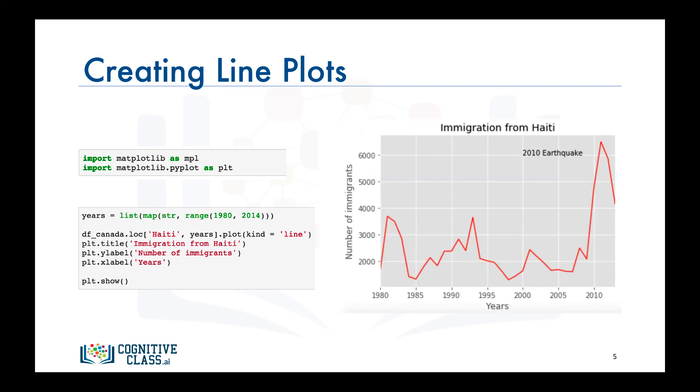Note that this is the code to generate the line plot using the magic function %matplotlib with the inline backend. And there you have it, a line plot that depicts immigration from Haiti to Canada from 1980 to 2013.